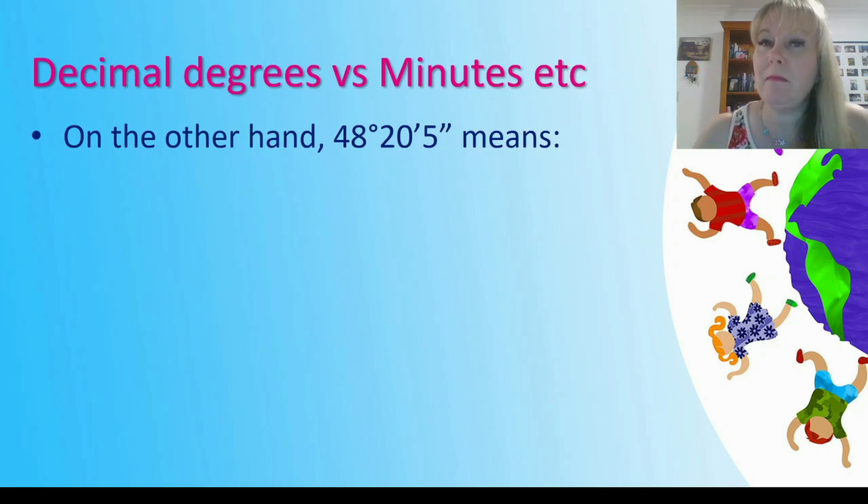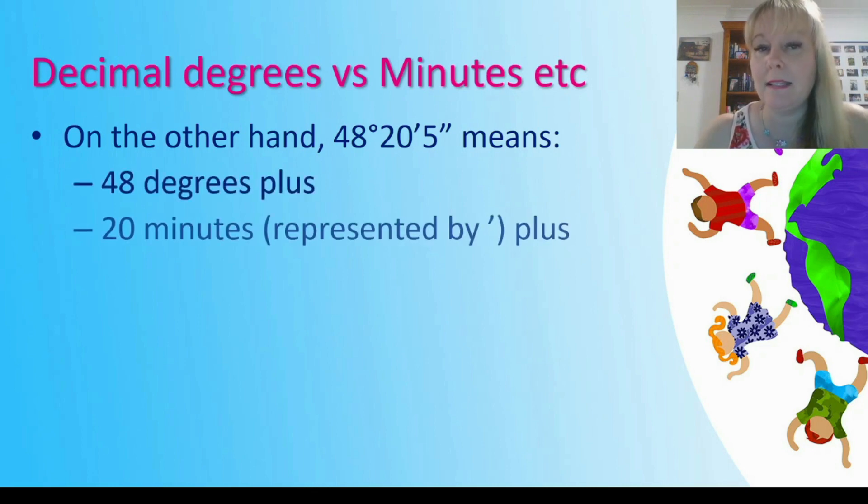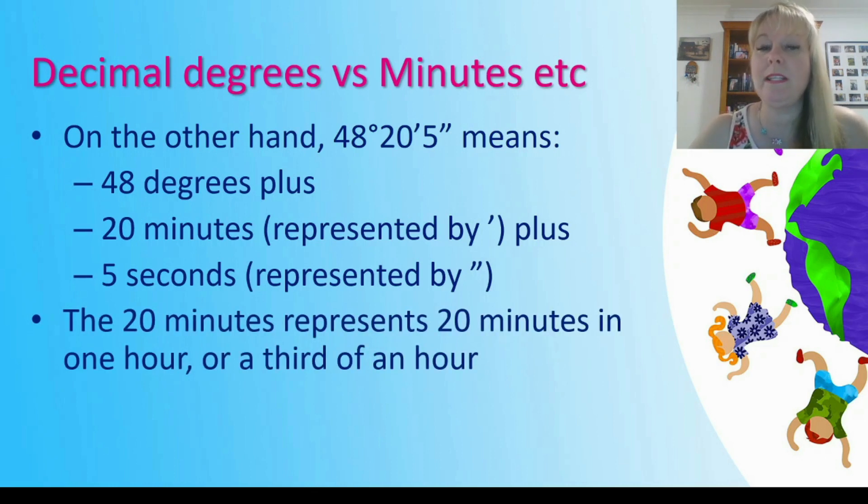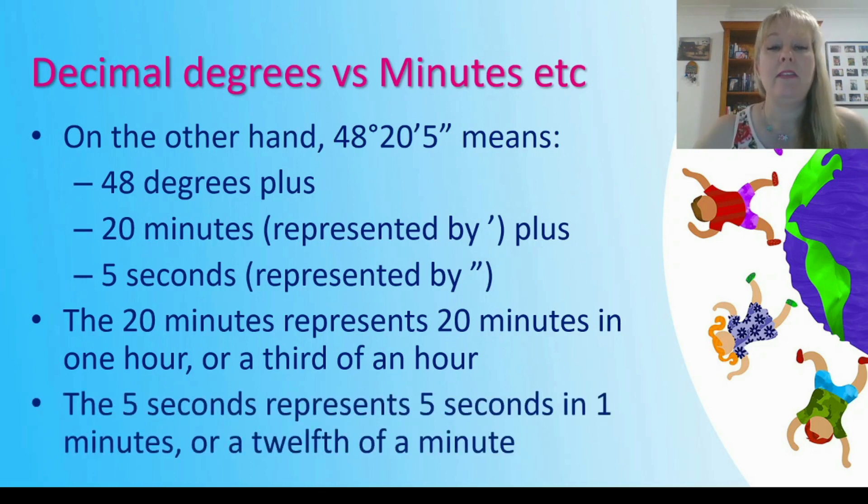So if I have 48 degrees 20 minutes and 5 seconds, that means 48 degrees plus 20 minutes plus 5 seconds. These 20 minutes represent 20 minutes in one hour. There's 60 minutes in an hour so 20 divided by 60 equals 1/3 of an hour. The 5 seconds represents 5 seconds in 1 minute. When we're doing these conversions we convert those seconds into fractions of an hour. There are 60 seconds in 1 minute, 60 minutes in 1 hour. 60 times 60 is 3,600 seconds in an hour. So we do our fractions for seconds out of 3,600.